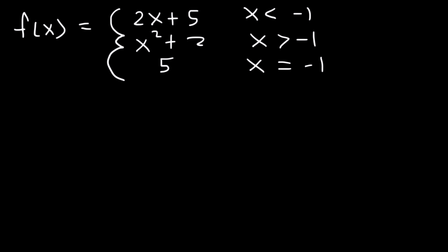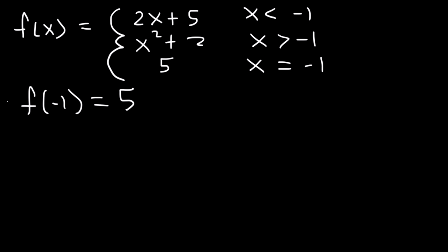First, determine if the function is defined at negative 1. When x is exactly negative 1, y equals 5 — so f of negative 1 is 5. Therefore f of a is defined, and we're finished with step 1.